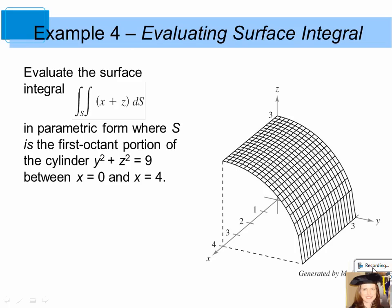This is an example of evaluating a surface integral. Let's evaluate the surface integral of x plus z ds in parametric form where S is the first octant portion of the cylinder y squared plus z squared equals 9, between x equals 0 and x equals 4.